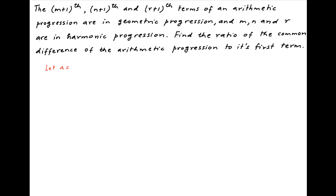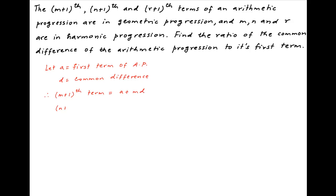Let A be the first term of the arithmetic progression and let D be the common difference. Therefore, the (m+1)th term is equal to a plus md, the (n+1)th term is equal to a plus nd, and the (r+1)th term is equal to a plus rd.